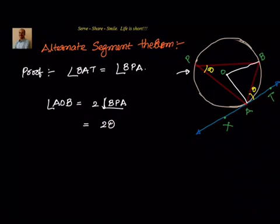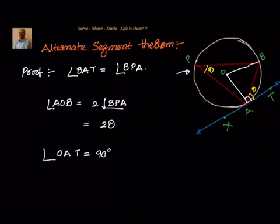Once we join O to A, we know this angle is equal to 90 degrees. Angle OAT equals 90 degrees, because the line drawn from the center to the point of contact of a tangent makes 90 degrees at the point of contact.